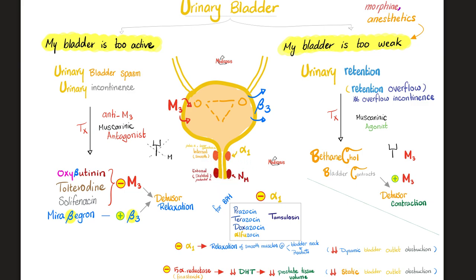The same applies to the colon: before boosting colonic motility, make sure there is no anatomical obstruction, otherwise you will rupture the colon. After ruling out anatomical obstruction, you can boost the detrusor muscle contraction by giving bethanechol, which is a muscarinic M3 receptor agonist.